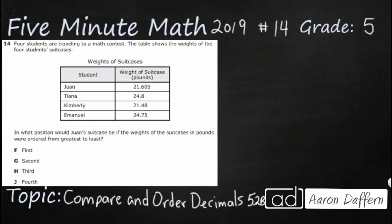Hello and welcome to 5-Minute Math. Today we are looking at the 5th grade concept of comparing and ordering decimals. This is standard 5.2b in the great state of Texas and we are using item number 14 off the 2019 released STAAR test.